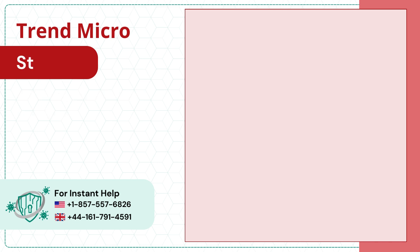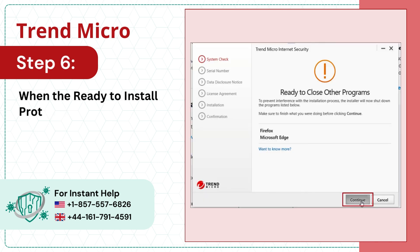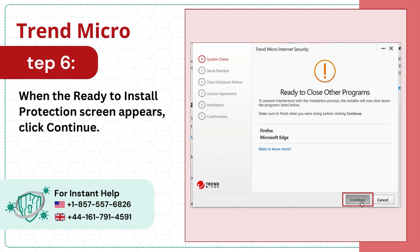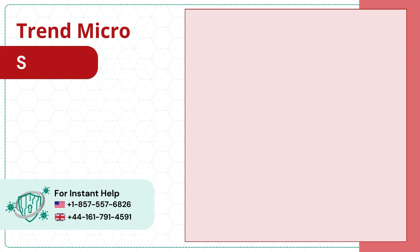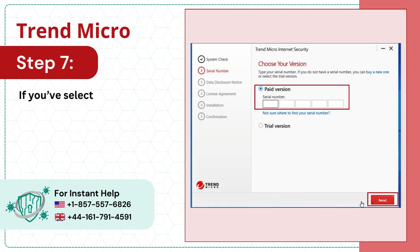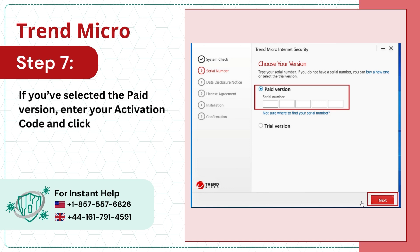Step 6: When the Ready to Install Protection screen appears, click Continue. Step 7: If you've selected the paid version, enter your activation code and click Next.